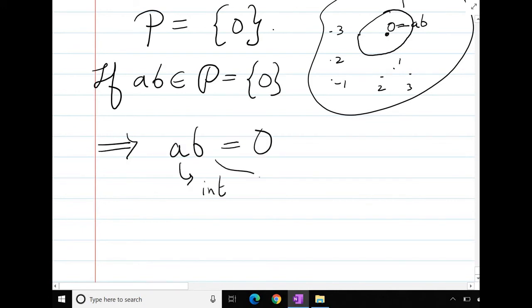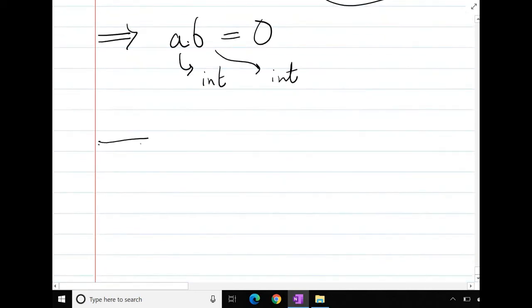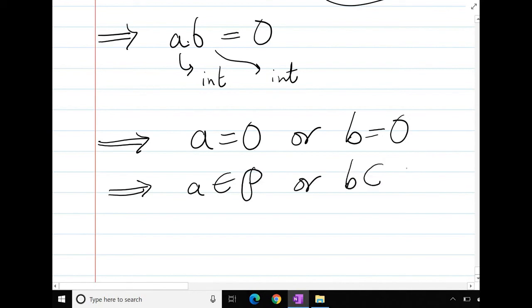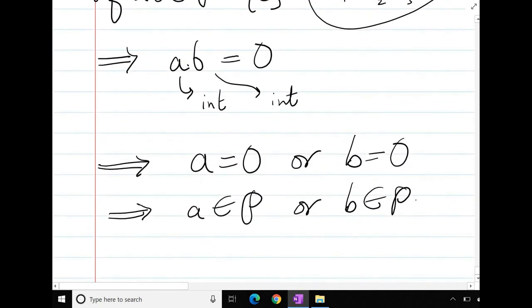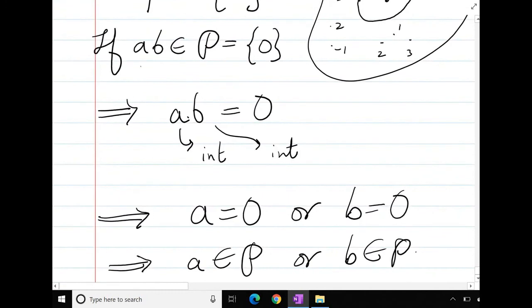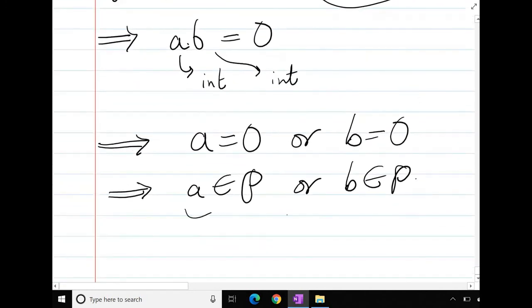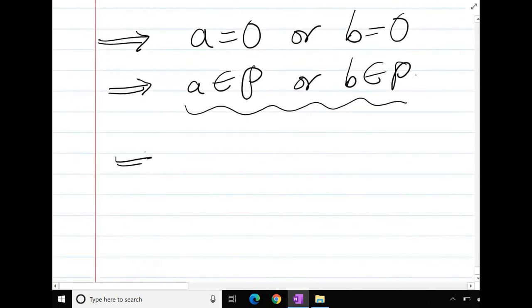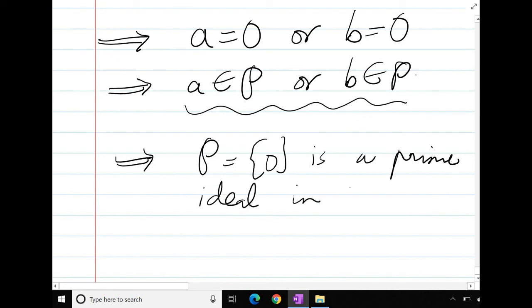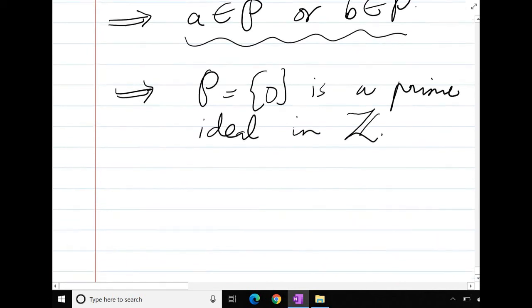So a is an integer, b is an integer, multiplication is zero. So what can we say? At least one of them is zero. Both also can be zero. This means a belongs to P. So if ab is in P, we want to control a belongs to P or b belongs to P. So this means P which is singleton zero is a prime ideal. Can we generalize this?